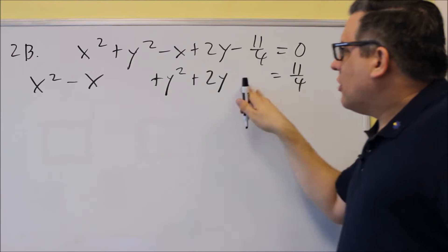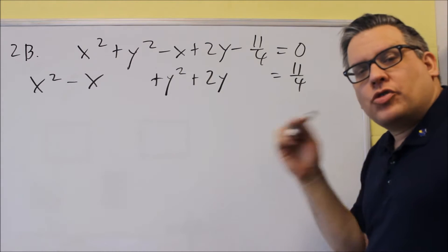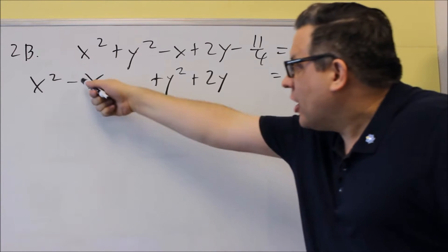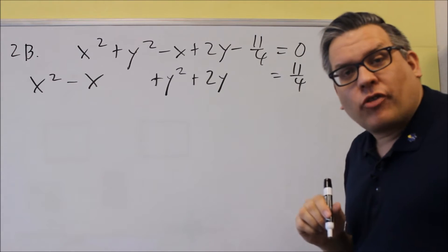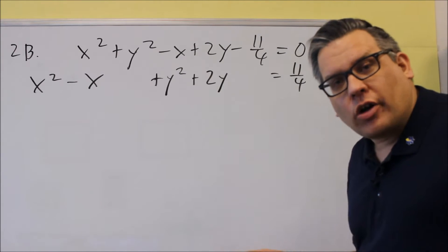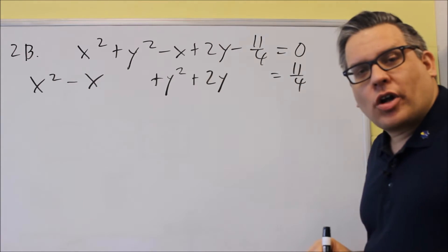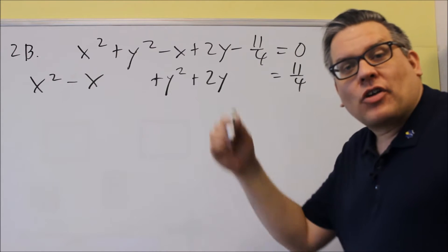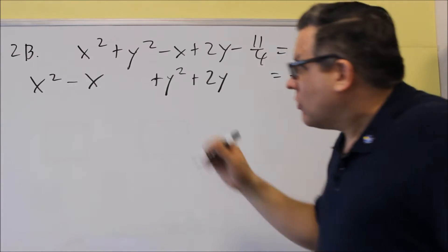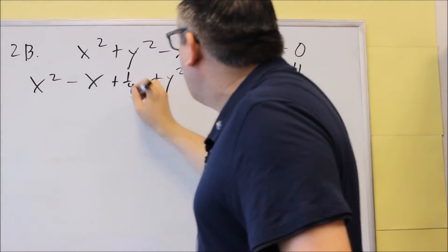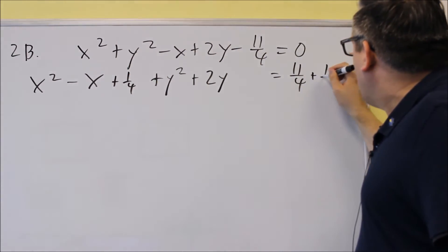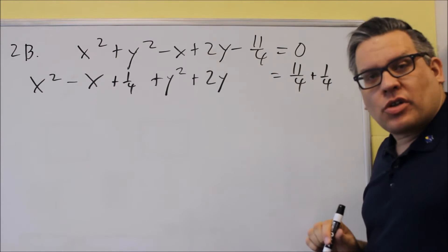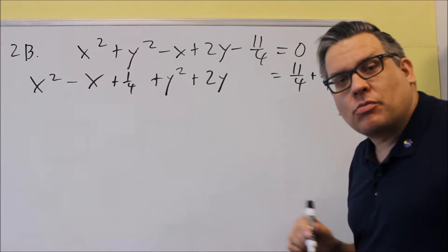The spaces will be filled in by doing the complete the square steps. Complete the square has two steps. Step one: divide the coefficient of the non-squared variable by 2, then square it. If I take negative 1, divide by 2, I get negative 1 half. Then I square it and I get 1 fourth. So I add 1 fourth here, and I also add 1 fourth after the equal sign — always add the same number on both sides to keep the equation balanced.